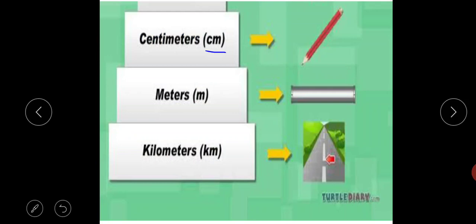Second is meter, written as m. It is used to measure medium lengths. For example, length of a rod, length of a wall, length of cloth, etc.